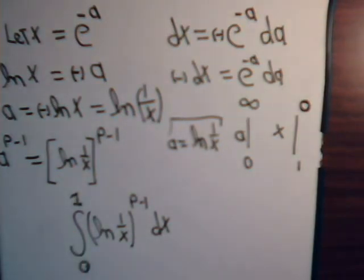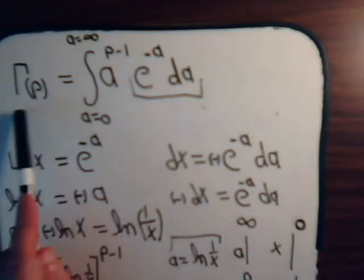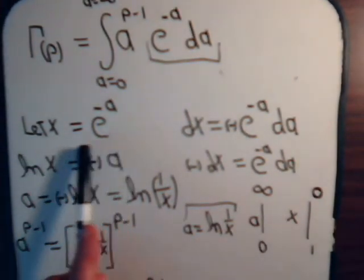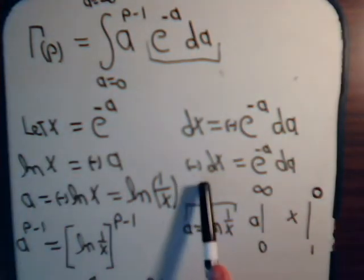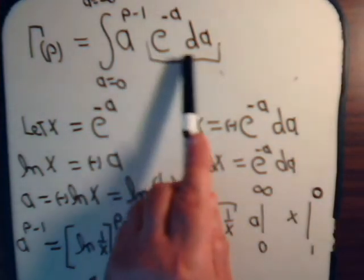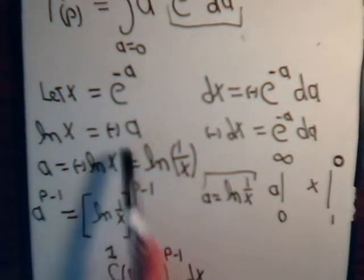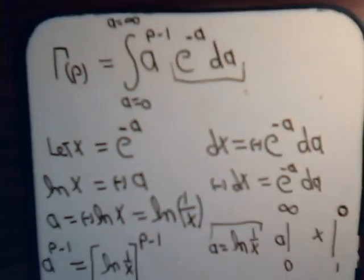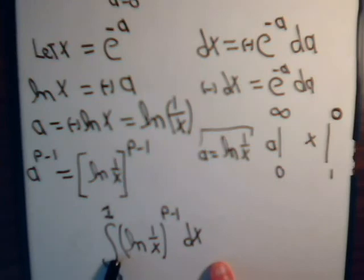So, we began with this integral, and then as soon as we made this substitution right here, that really set us up for the rest of the problem then. Because if x is this, minus dx is this, which gives us this part of the integral. Then from here, take the natural log of both sides. We have a is equal to this, and then this part of the integral is this.